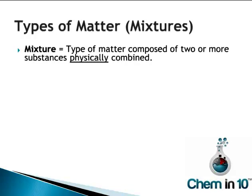A mixture is a type of matter composed of two or more substances physically combined — not chemically combined. For example, a bowl of raisin bran cereal consists of bran, raisins, and milk. It's a physical mixture. Air is also a mixture — it consists mostly of nitrogen gas and some oxygen gas and various other gases.